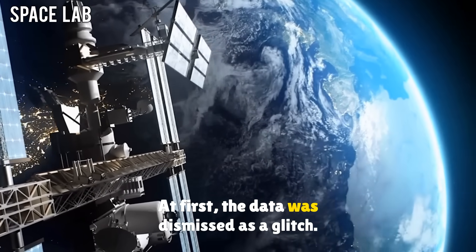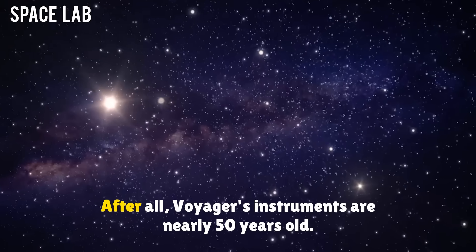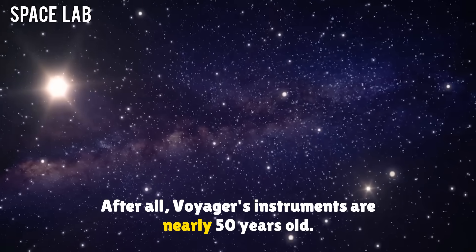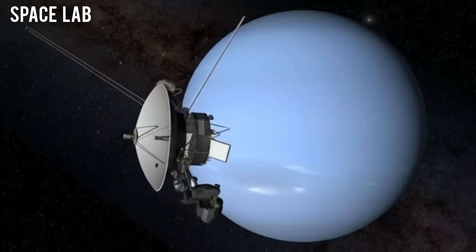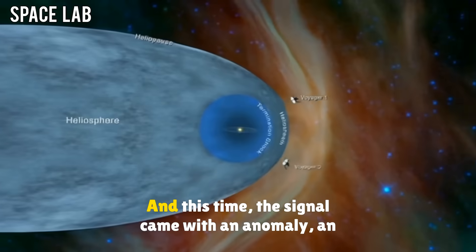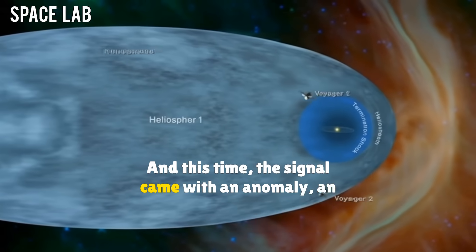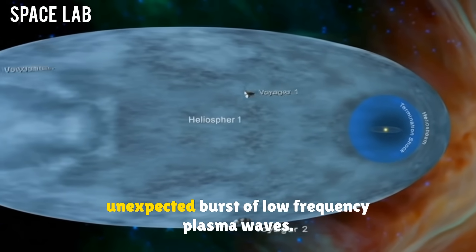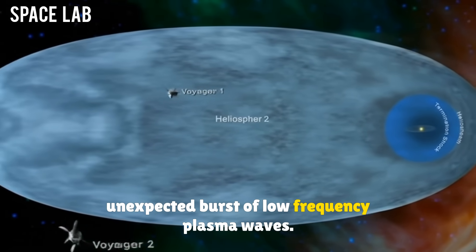A fluctuation in the interstellar magnetic field that defied all known physics. At first, the data was dismissed as a glitch. After all, Voyager's instruments are nearly 50 years old. But then, the signal repeated. And this time, the signal came with an anomaly.